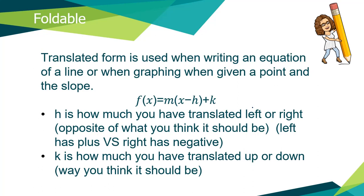So here's where that foldable that you have is coming into play. The translated form is used when writing an equation of a line or when graphing and when given a point and a slope. So this is super useful in the regards of we don't have to have the b term at all. So this is our translated form of our line: f(x) equals m parentheses x minus h plus k. The h is how much you've translated left or right, opposite of what you think it should be. So left is going to have a plus on it and right is going to have a negative. The h is how far horizontally you moved or left or right. Now that h is going to also be the x part of our ordered pair.